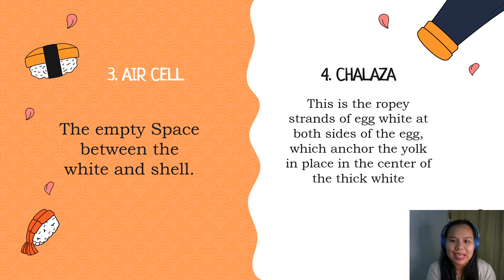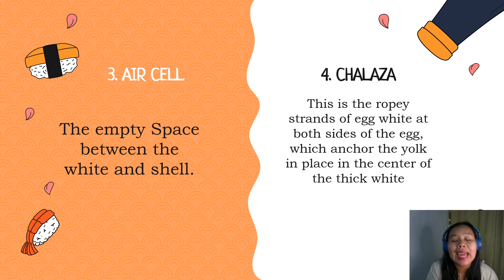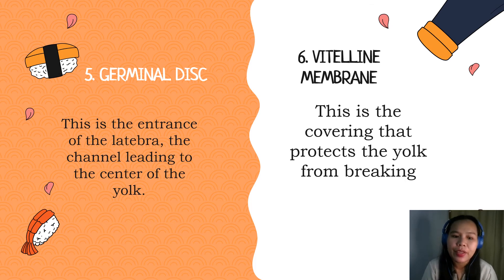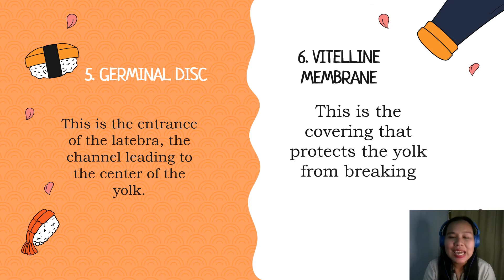Next, we have calaza. This is the ruby strand of egg white at both sides of the egg, and it holds the egg yolk in place, or in the center of the thick albumen. Remember that the more prominent the calaza, the fresher is the egg. Next, we have the germinal disc. It is the channel leading to the center of the yolk. When the egg is fertilized, sperm enter by way of the germinal disc, travel to the center, and a chick embryo starts to form. But since table eggs are not fertilized, we cannot easily distinguish or recognize the germinal disc.